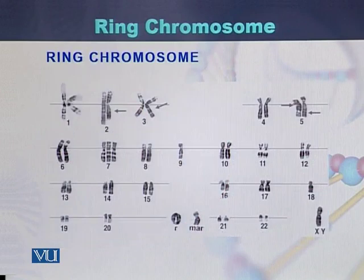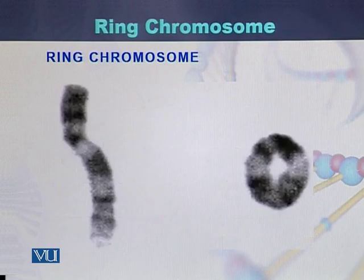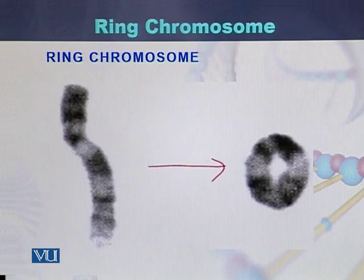In this karyotype, we can see the ring chromosome, denoted by 'R'. This illustrates the conversion of a normal chromosome into a ring chromosome.